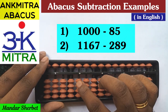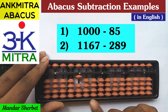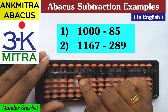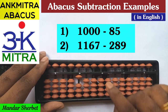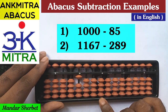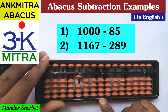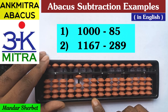So 1000 on the abacus will be like this. This is our units place, tens place, hundreds place, and thousands place. On the thousands place, I have taken 1, so this number on the abacus becomes 1000 right now. And to subtract 85 from this, it will start on the tens place rod, that is this rod.